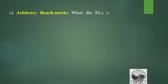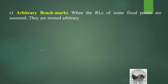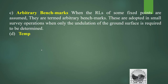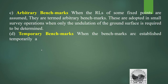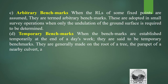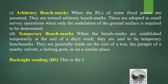Arbitrary benchmark: when the reduced levels of some fixed points are assumed, they are termed arbitrary benchmarks. These are adopted in small survey operations when only the undulation of the ground surface is required. Temporary benchmark: when benchmarks are established temporarily at the end of a day's work, they are called temporary benchmarks. They are generally made on the root of a tree, the parapet of a nearby culvert, a forelock post, or a similar place.